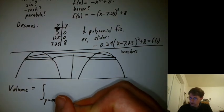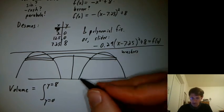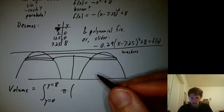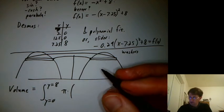So we'd say integral y equals 0 to y equals 8. Pi times, and what was our formula for volume with washers?